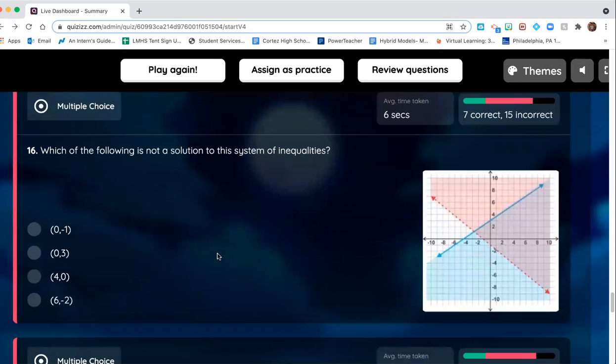Same song and dance. Point that's not a solution to the system. You have zero, negative one, which is here, which is on a dashed line. So we're actually able to say that one's probably it. Zero, three is definitely on the blue line but it's also in the red, so this is a solution. Four, zero is below the blue line and above the red line, so four, zero is a solution. But zero, negative one is not a solution, and that's what you should have picked here.